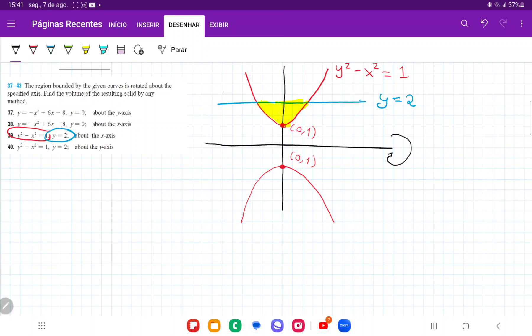The area between them is shaded in yellow, so the first thing that I have to do is I have to find these points right here, which is where they're going to intersect. So I have that y is equal to 2, and I have the other curve that y squared minus x squared is equal to 1.